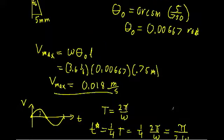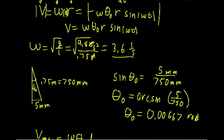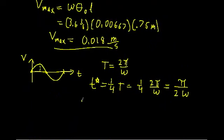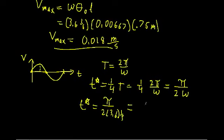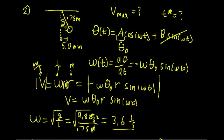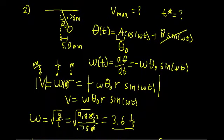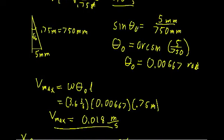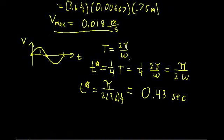Plugging in ω = 3.6 Hz, we get T* = π / (2 × 3.6), which comes out to approximately 0.43 seconds. So we've found both the maximum velocity and the time it takes to reach that maximum, just using the equations of motion. It's also possible to do this through energy considerations, and you should get the same answers. Let's carry on with more examples in the next video.